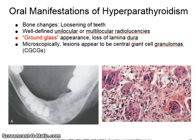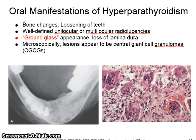Oral manifestations of hyperparathyroidism include loosening of teeth, unilocular or multilocular well-defined radiolucencies, a ground glass appearance, and loss of lamina dura. Microscopically, the lesions appear to be a central giant cell granuloma. The lower left image shows the ground glass appearance and loss of lamina dura.